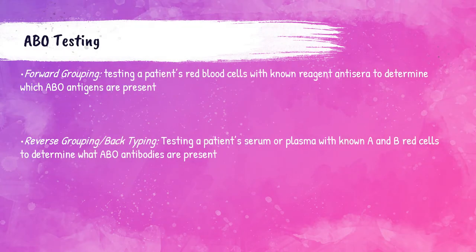The most important test in the blood bank is ABO testing or ABO typing. The ABO typing procedure includes both forward grouping and reverse grouping. Forward grouping — also called front typing — involves testing the patient's red blood cells with known reagent antisera containing either anti-A, anti-B, or anti-AB antibodies. The reverse grouping, or back typing, is testing a patient's serum or plasma with known A and B red blood cells to determine what ABO antibodies are present.